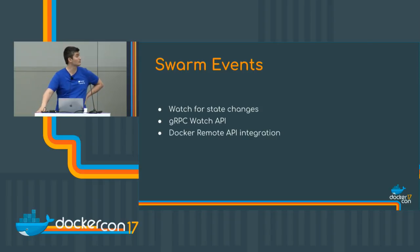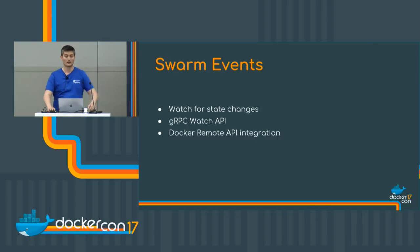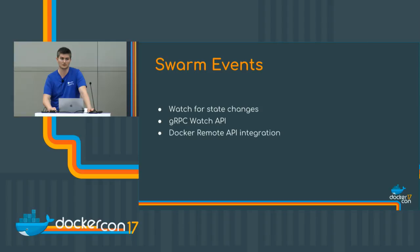We're also working on events. Today Docker events only gives you events regarding containers, images, and so on. With swarm events, you'll be able to see events regarding services, nodes, et cetera. It's provided via a new gRPC watch API and we've also integrated that into the Docker remote API. It's almost ready to go — probably going to be there by mid-May.